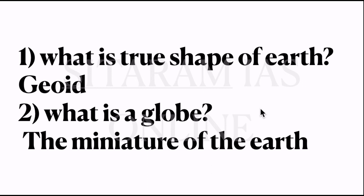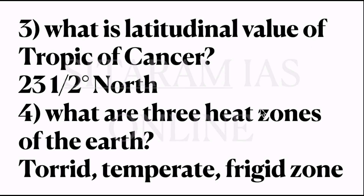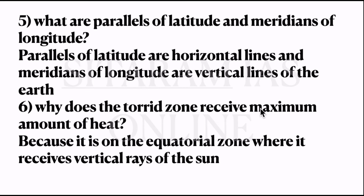Now coming to the textbook exercises. First question: what is the true shape of the earth? It is geoid. Second question: what is a globe? The miniature of the earth. Third question: what is the latitudinal value of the Tropic of Cancer? It is 23 and a half degrees north. Fourth question: what are the three heat zones of the earth? Torrid zone, temperate zone, and frigid zone. Fifth question: what are parallels of latitude and meridians of longitude? Parallels of latitudes are the horizontal lines and meridians of longitudes are the vertical lines. Latitudes are parallel to the equator and longitudes are perpendicular to the equator.